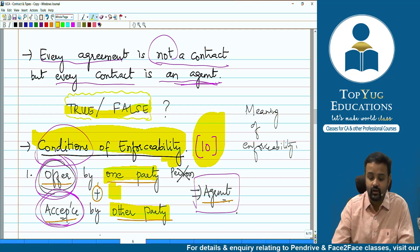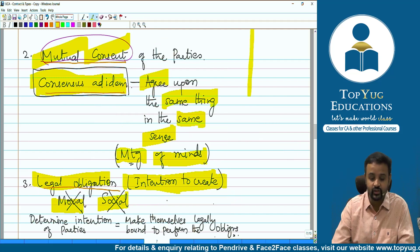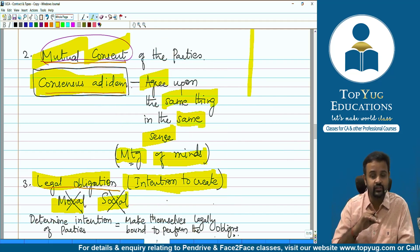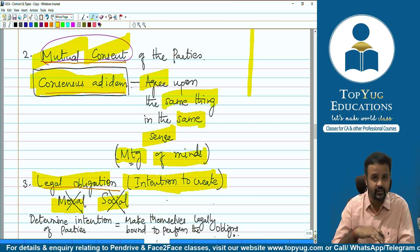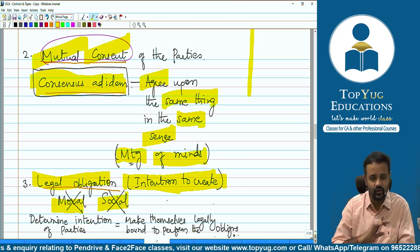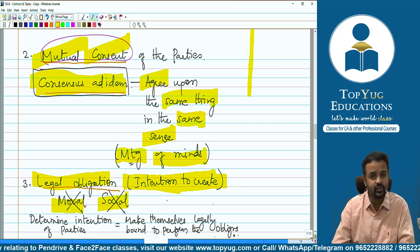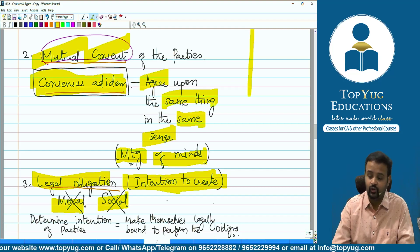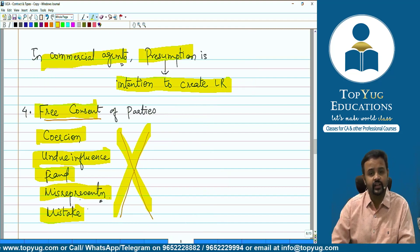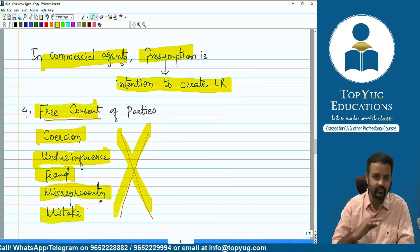What are those conditions of enforceability? There shall be an offer by one party to another party, and the other party should give acceptance. The offer should be understood by the offeree in the same sense — there should be a meeting of minds. The acceptance should be given on the same thing. There must be an intention to always create legal obligation, not social or moral obligation. In commercial agreements, the presumption is always that there is an intention to create legal relations.